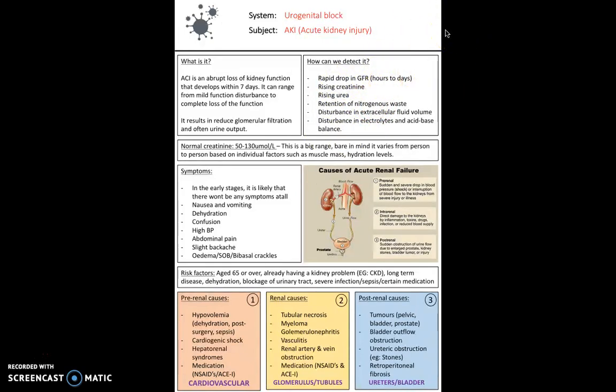What's really important is you can link it to normal kidney function. When that kidney function goes wrong, you should investigate for AKI. Normal creatinine falls between 50 and 130 micromol per liter. The problem is it's a big range, so it varies massively based on factors such as muscle mass, which deteriorates with age.